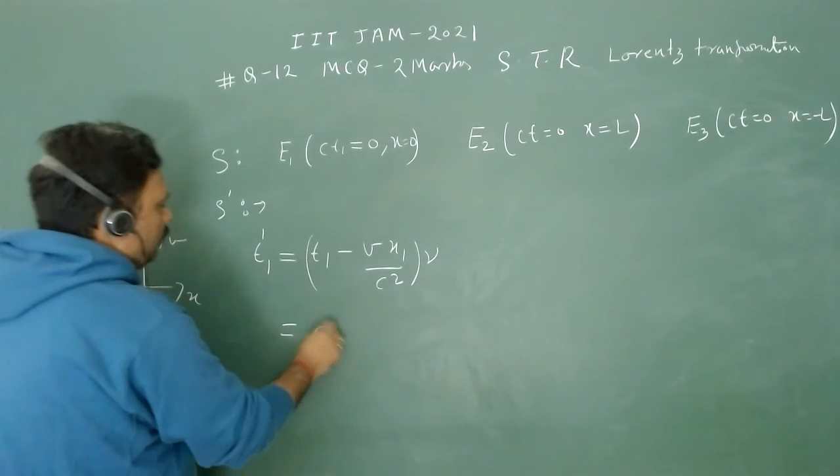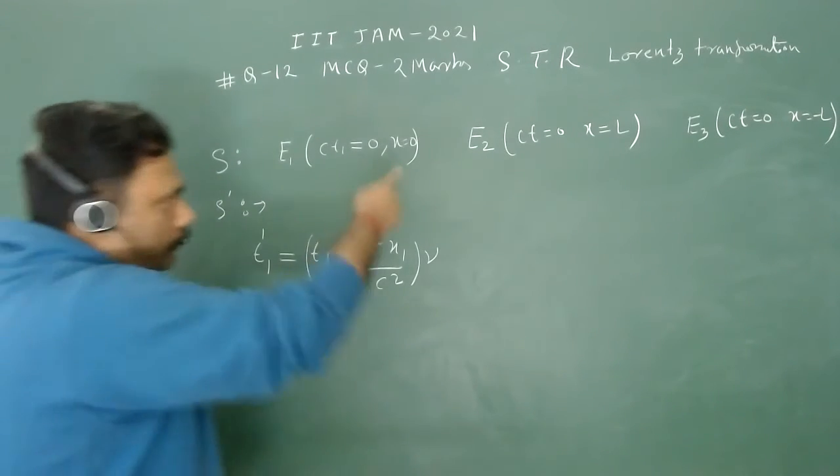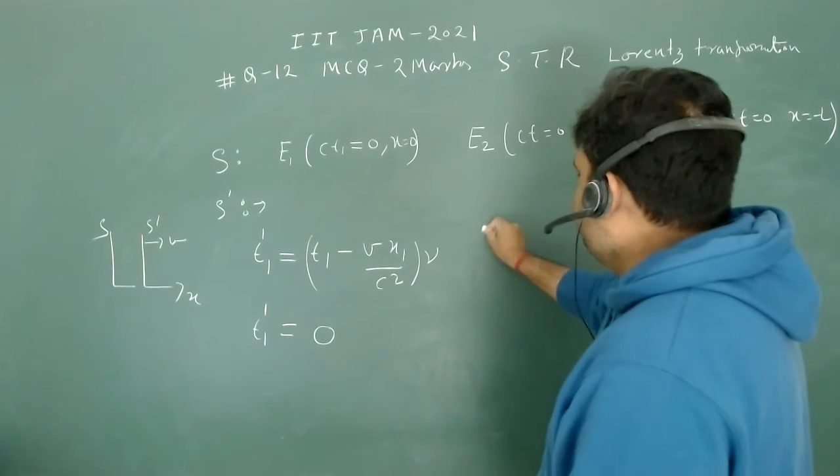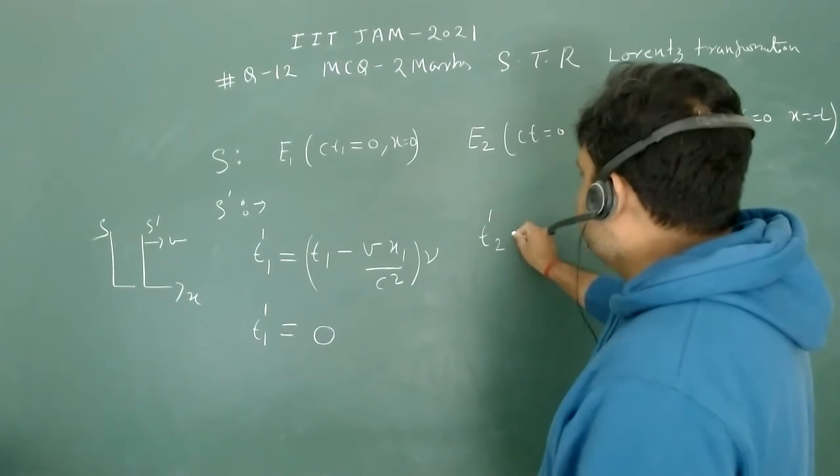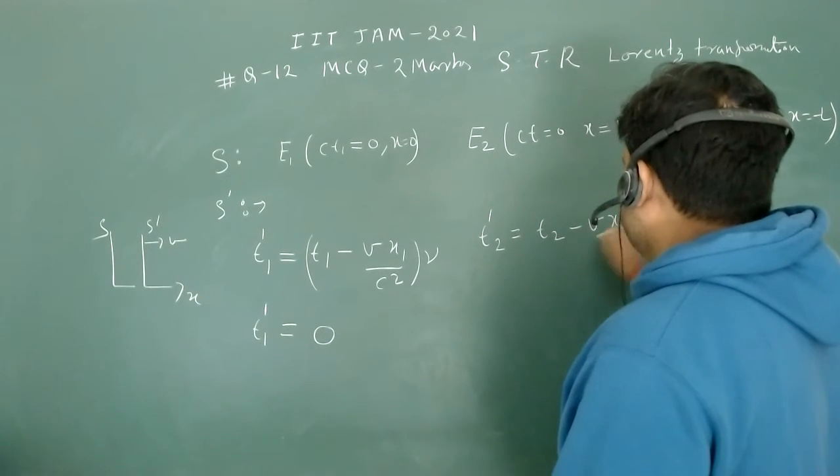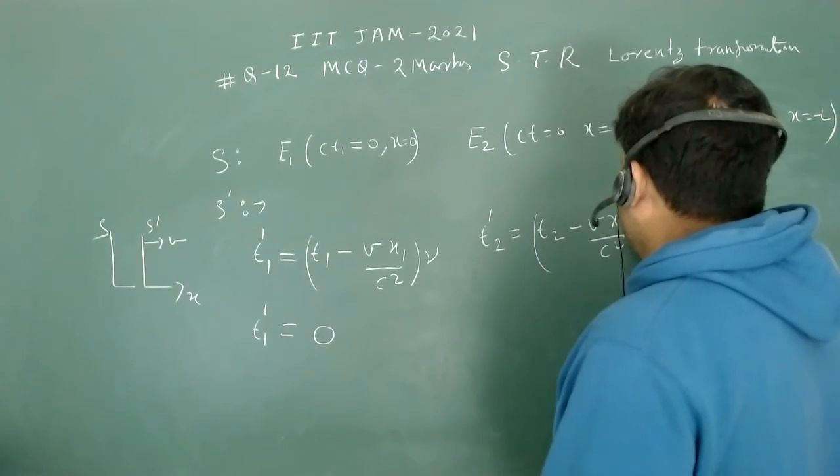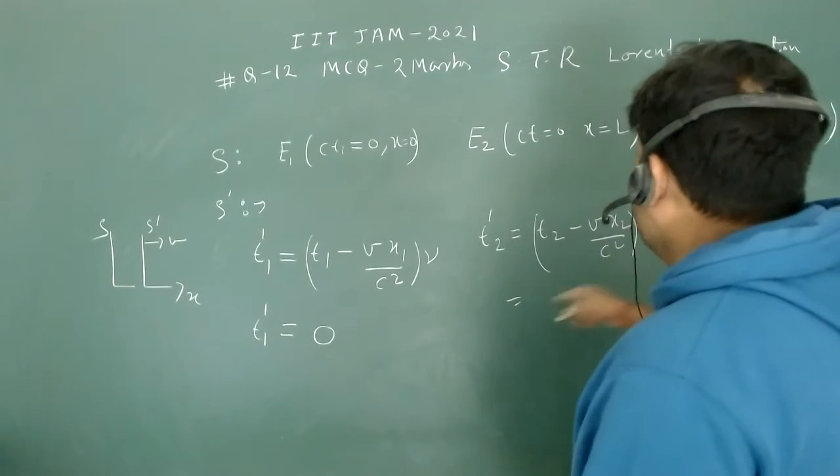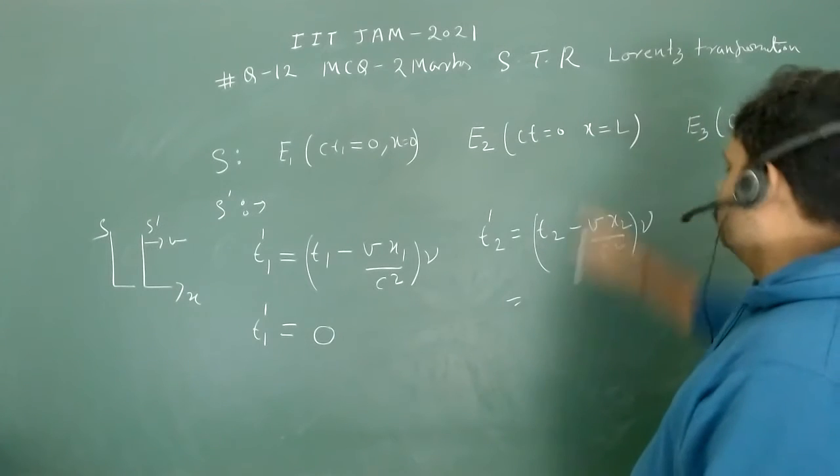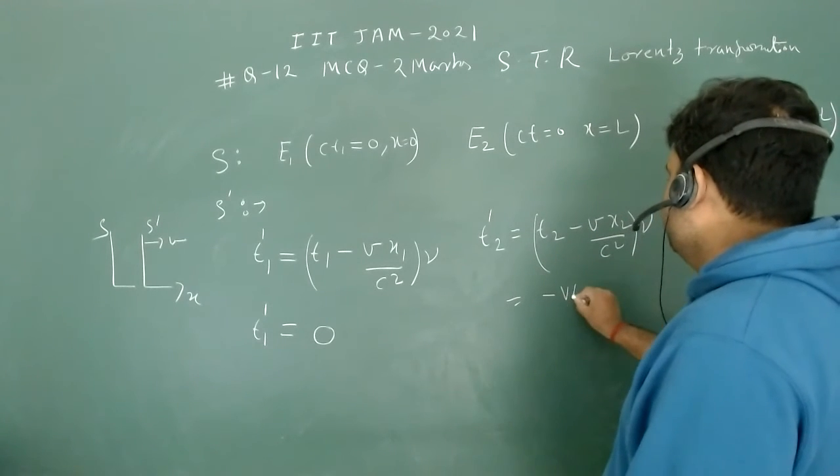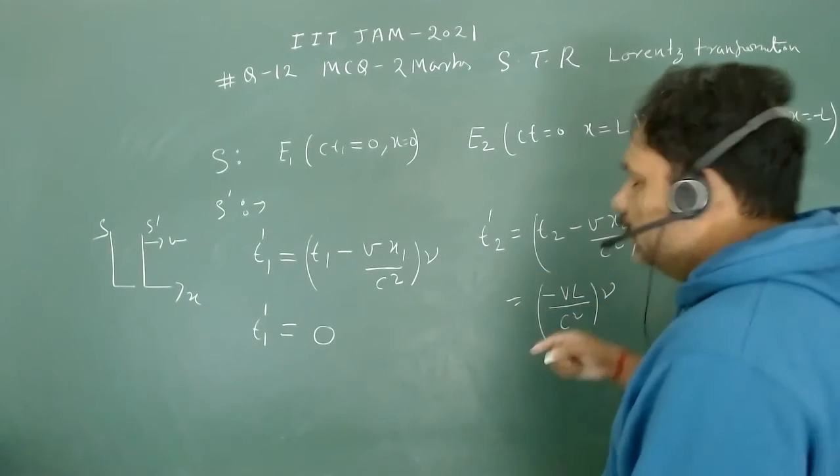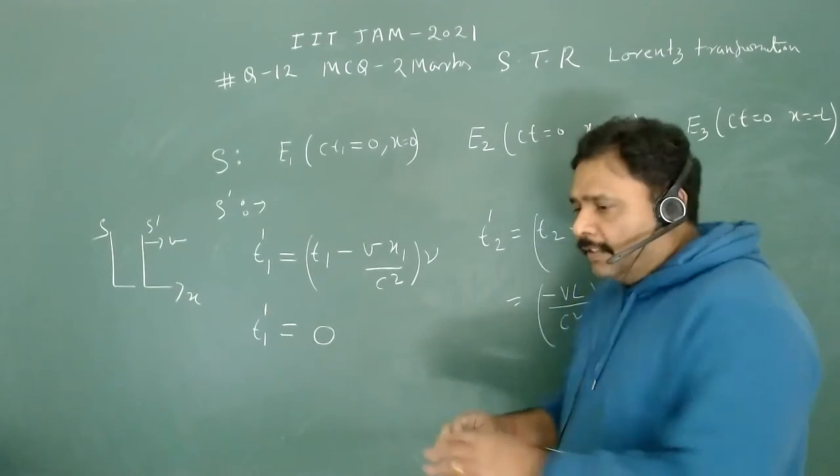For the second event, again we can write t2' = (t2 - vx2/c²)γ. t2 is again 0, but x2 is l, this is a positive value. So this value is -vl/c²γ. Here the time coordinate is negative, so obviously this event will occur before this one.